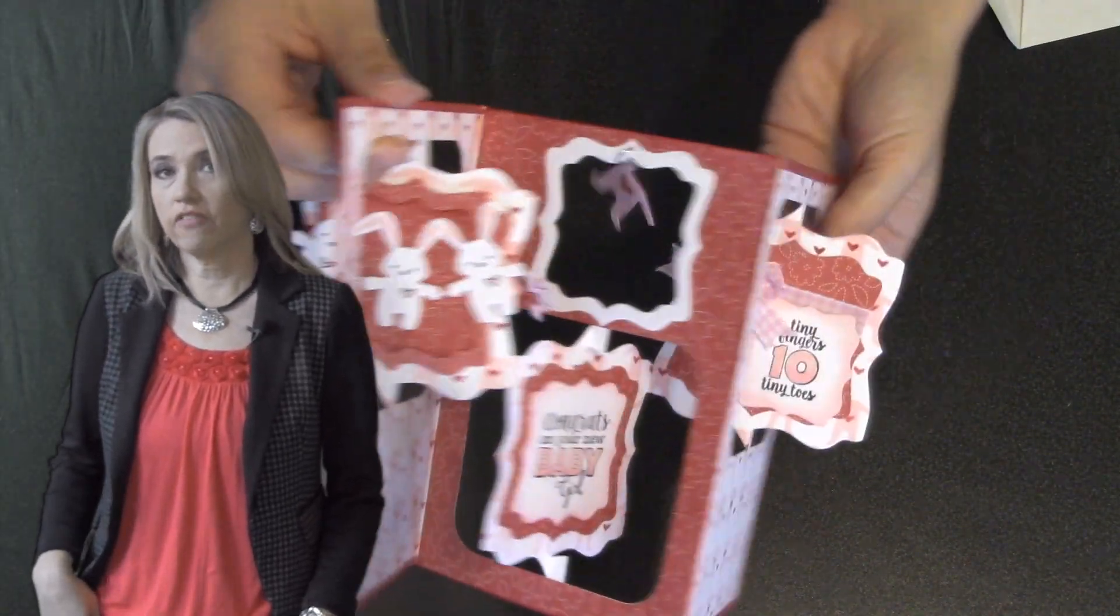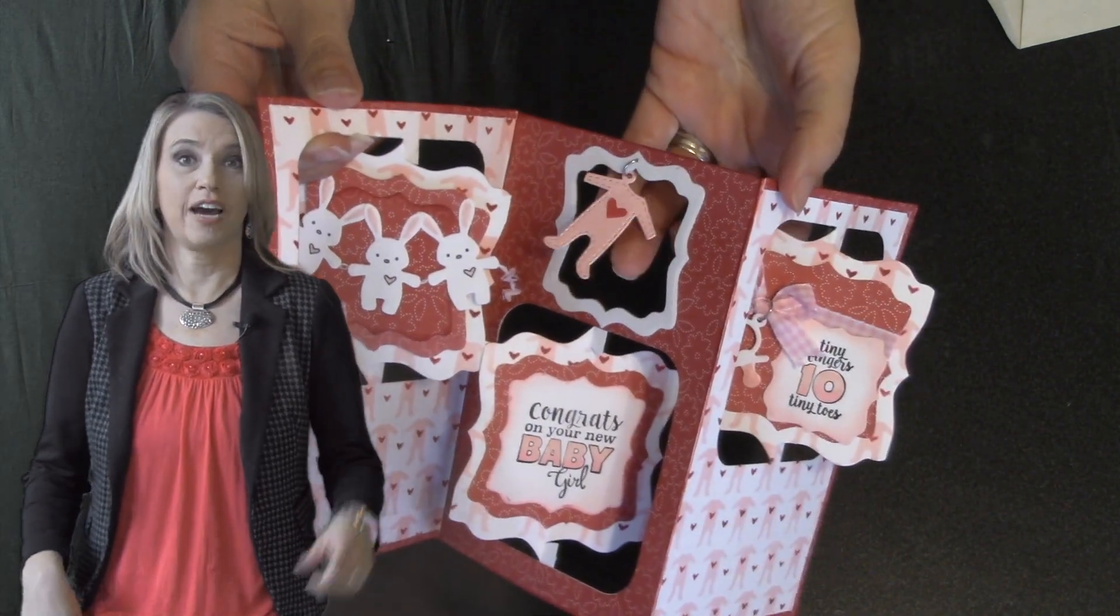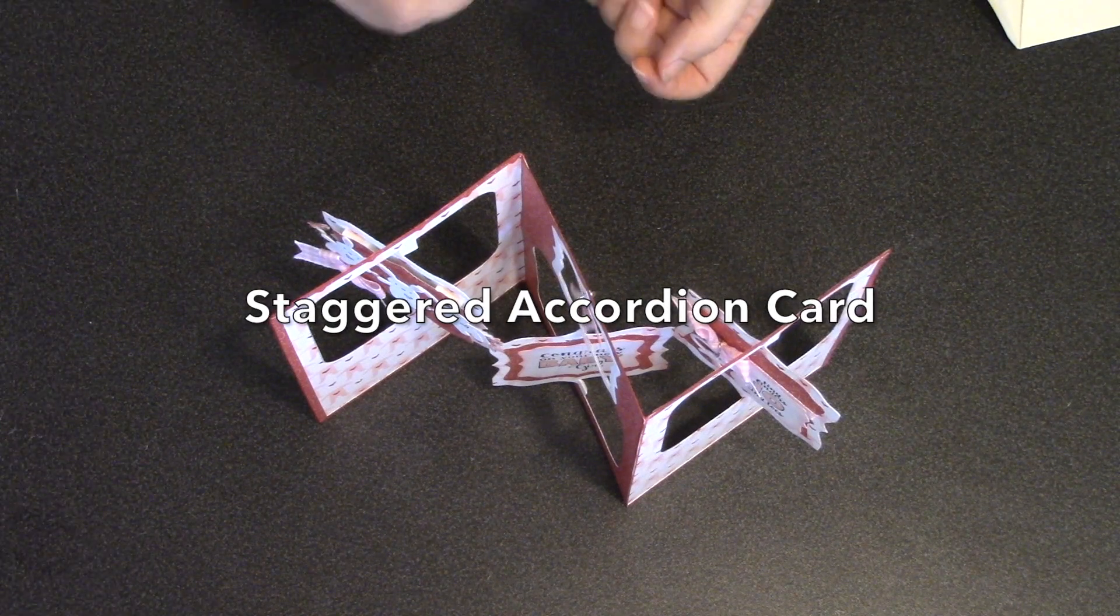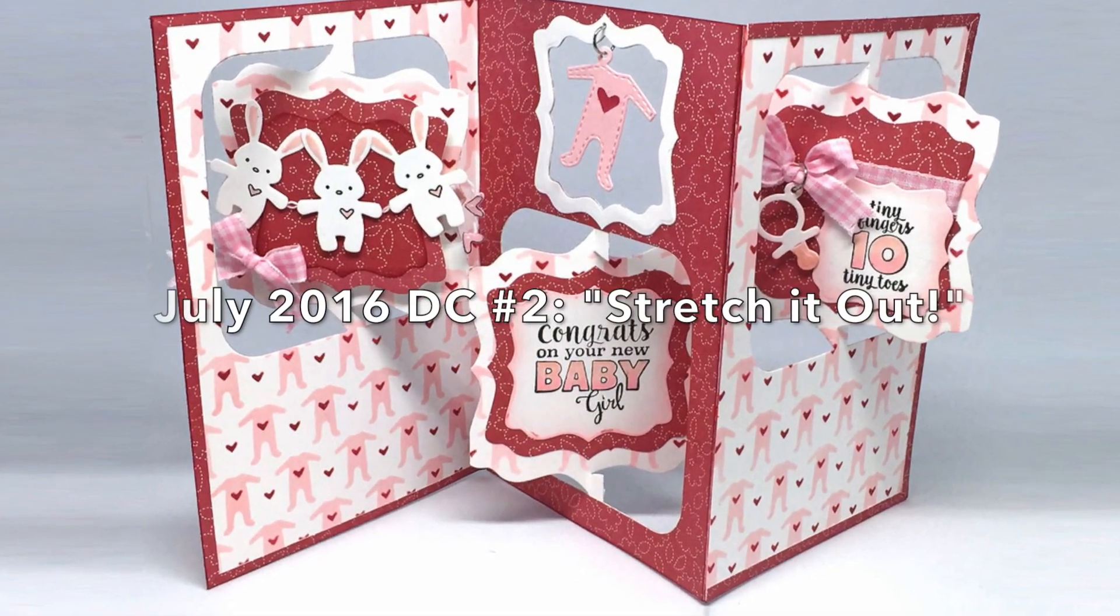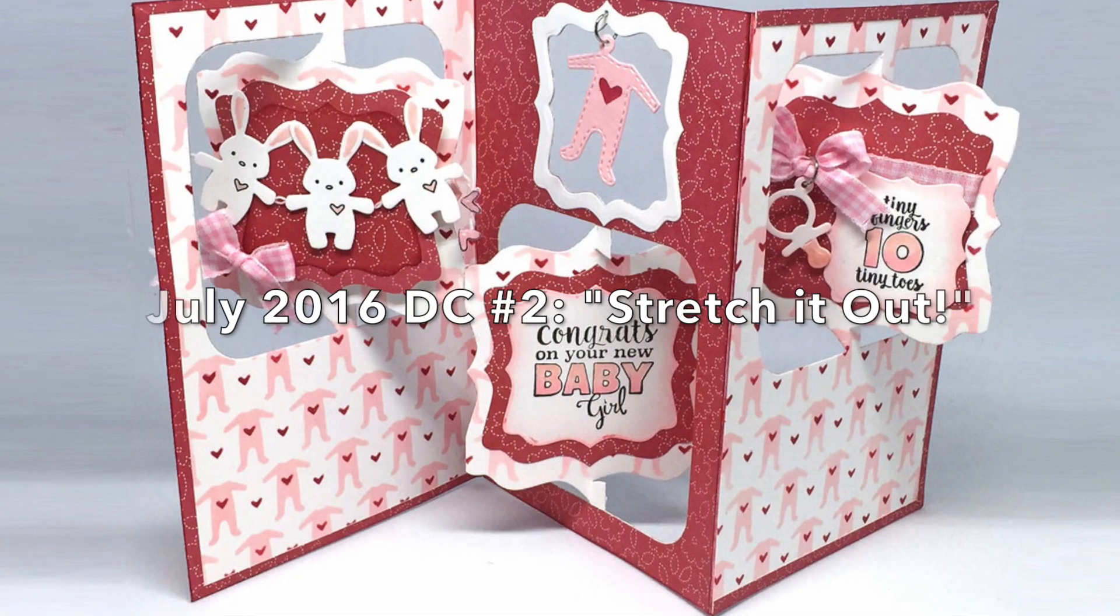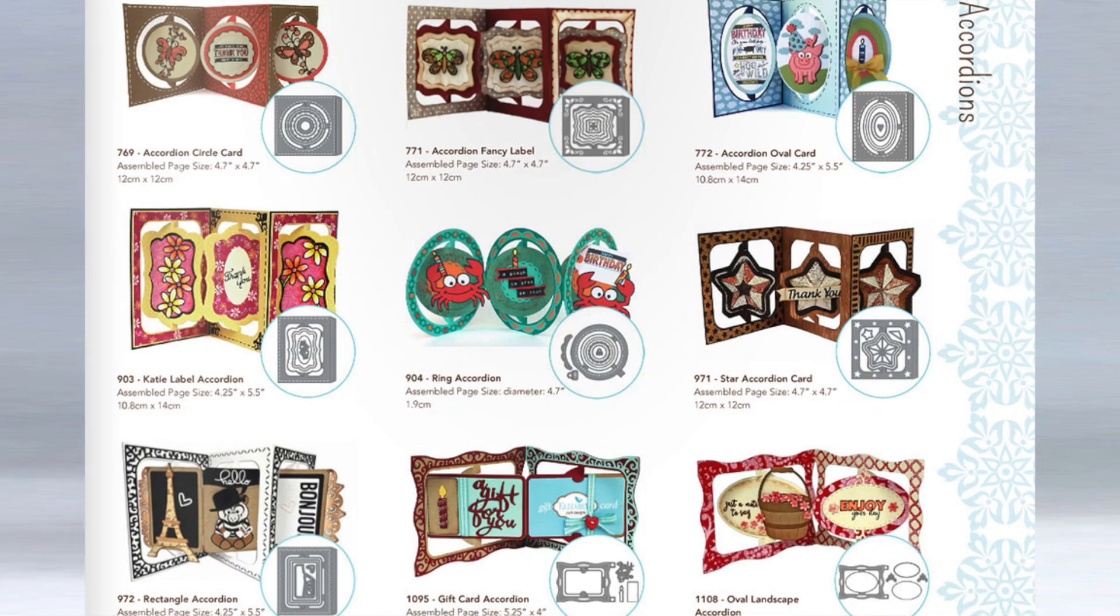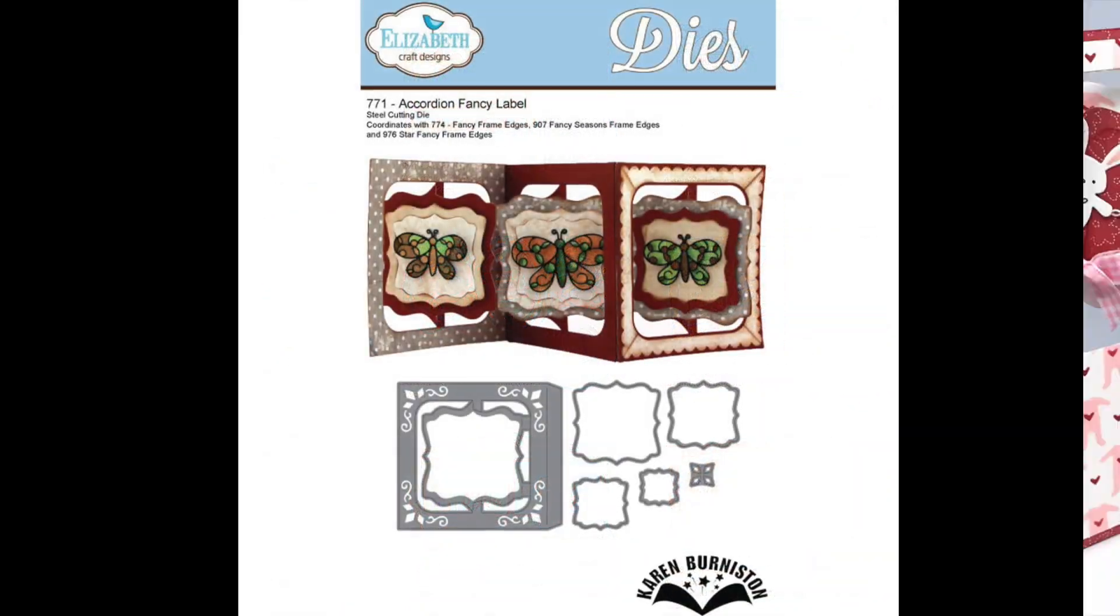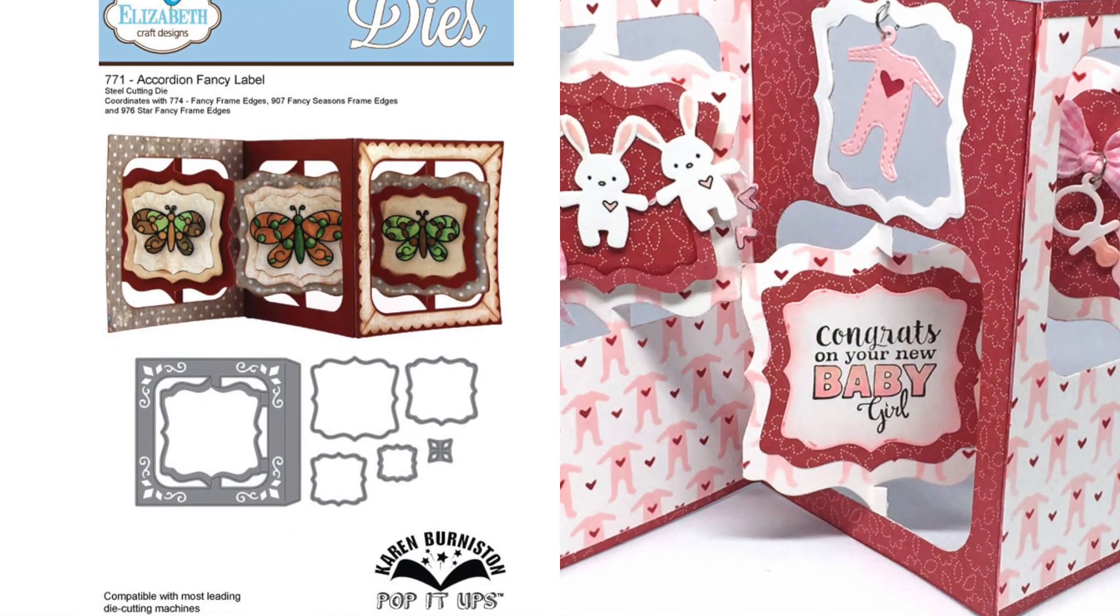Hi, I'm Karen Burniston, the designer of Pop It Up's products for Elizabeth Craft Designs, and today I'll be teaching how to make this: a staggered accordion card with a hanging charm. This is my project for the 2nd July 2016 Designer Challenge. This challenge was set by Kelly Booth, and her theme is called Stretch It Out, and we are to use one of the nine different accordion album dies. So today's technique is going to be an adaptation of 771, which is the fancy label accordion.